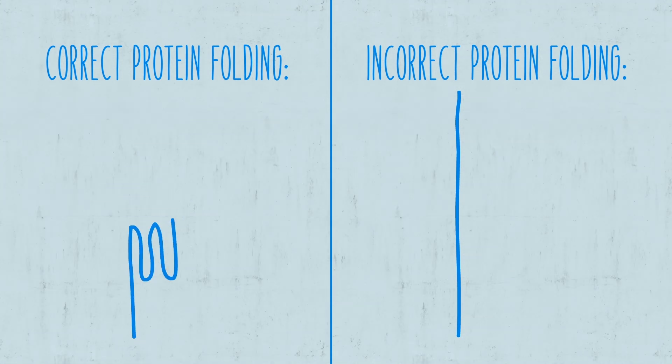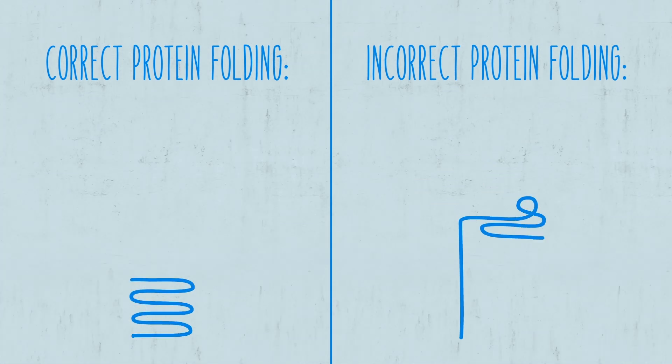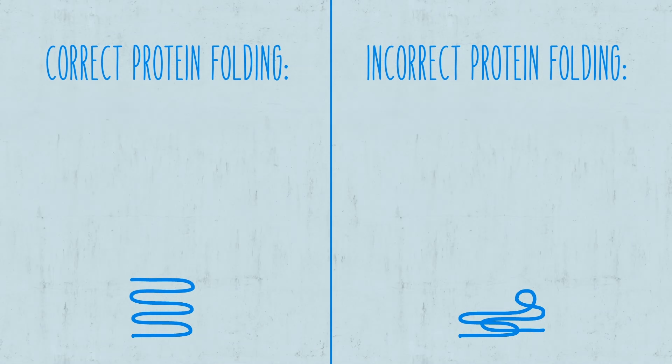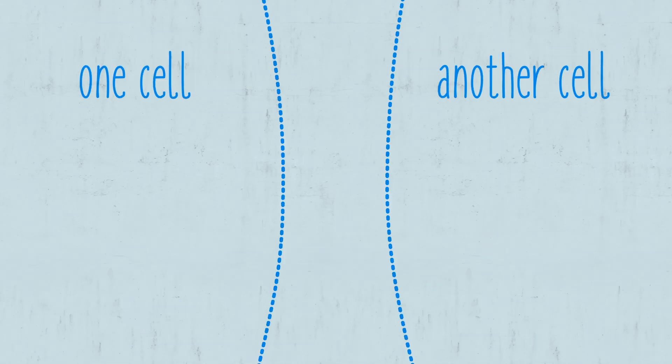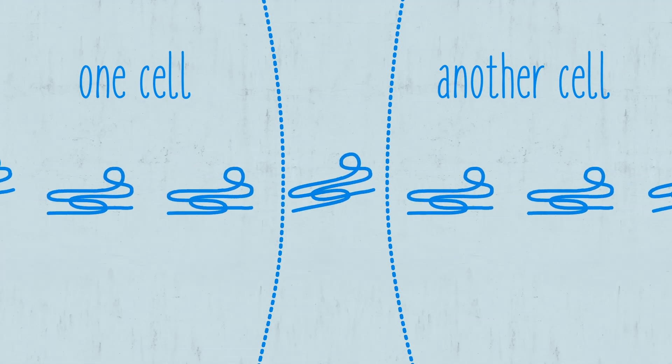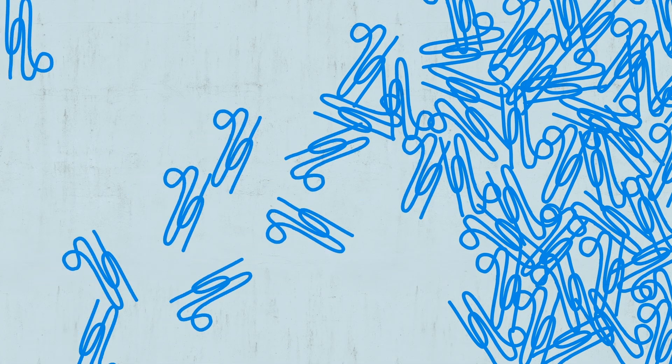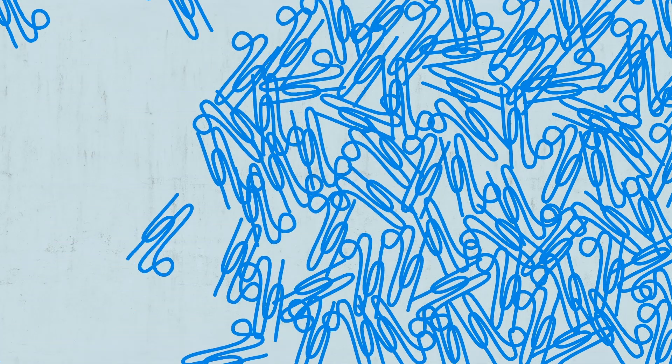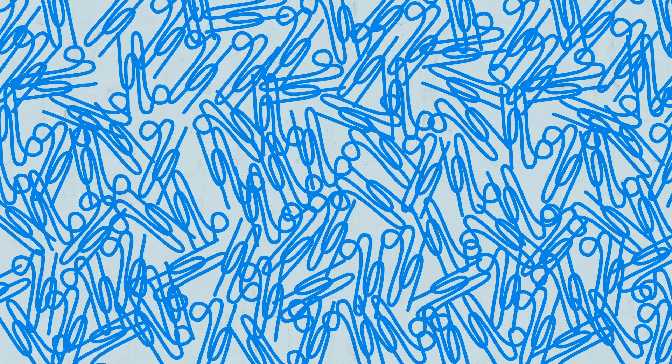One prevailing idea is that certain proteins inside the motor neurons aren't folding correctly, and are instead forming clumps. The misfolded proteins and clumps may spread from cell to cell. This could be clogging up normal cellular processes, like energy and protein production, which keep cells alive.